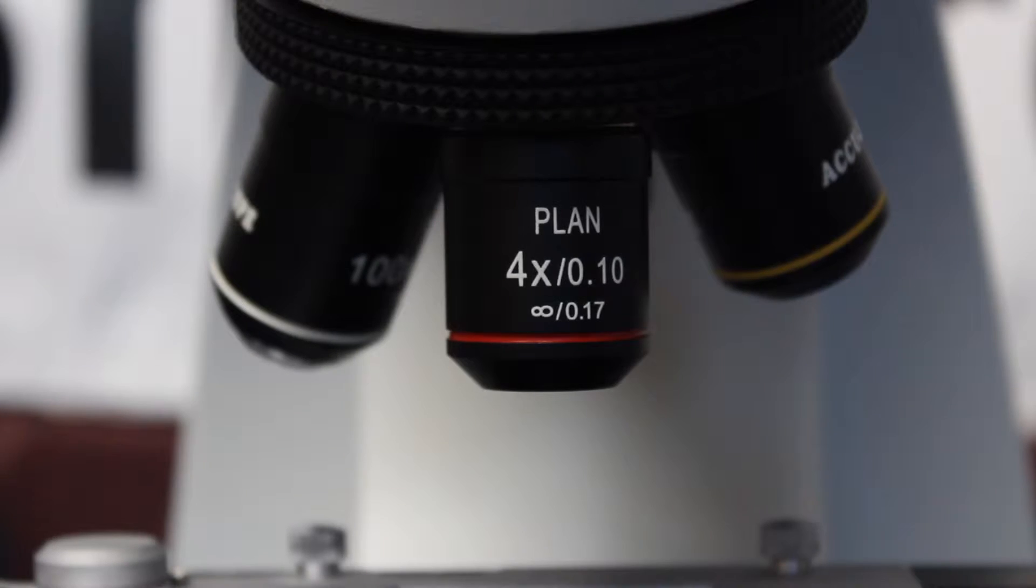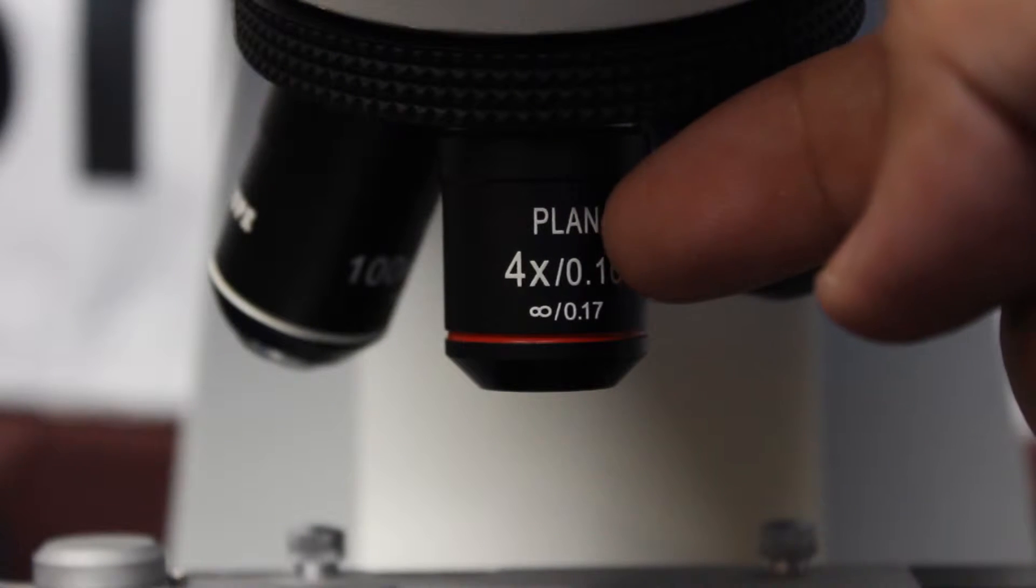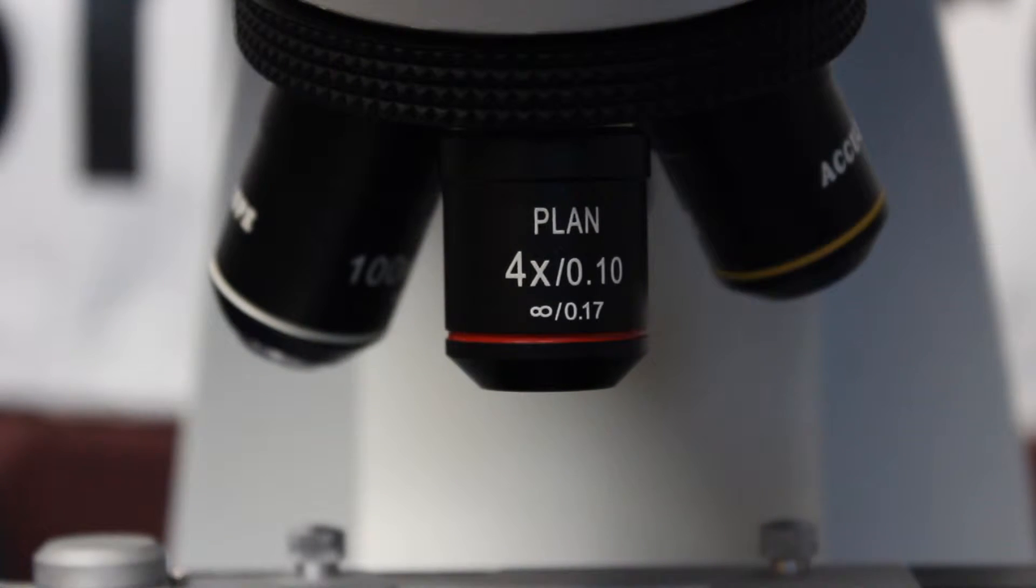If you're wondering how you can tell the difference between plan and DIN objectives it's really quite simple. On the objective itself it'll say plan or sometimes it'll say P, or for semi plan which is in between DIN and plan objectives it'll say SP or semi plan.